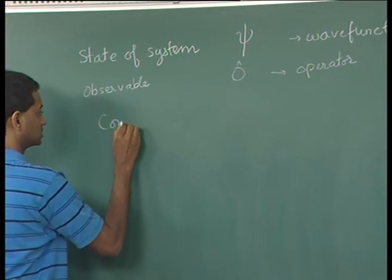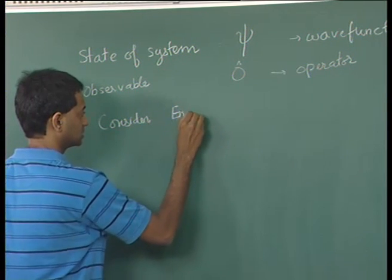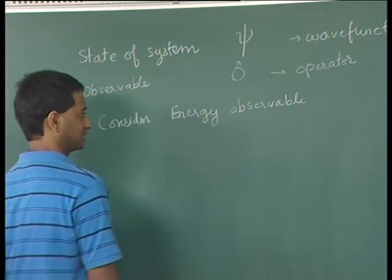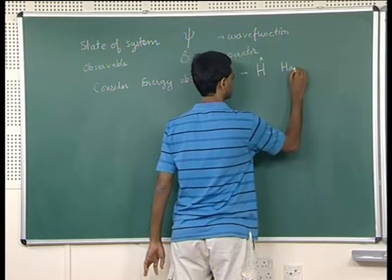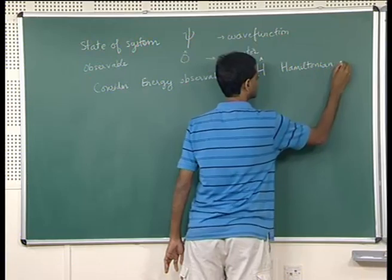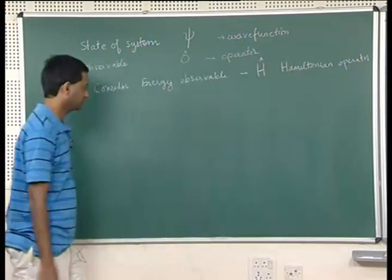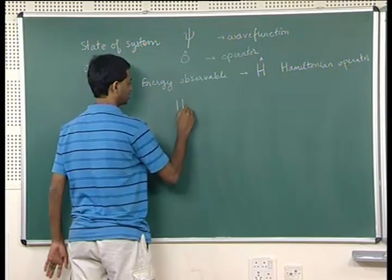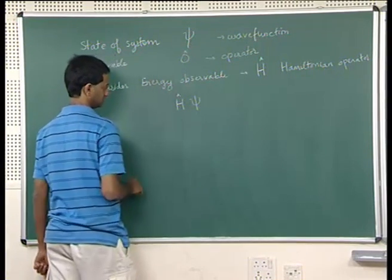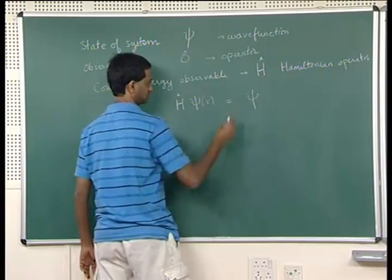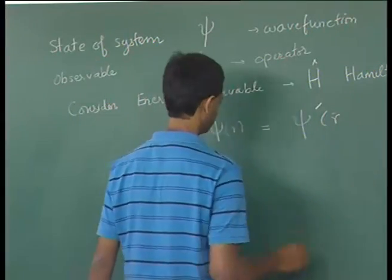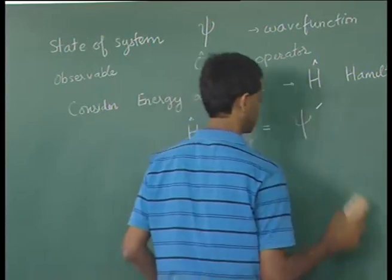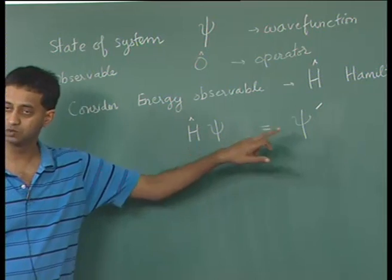Let us consider the energy observable. The operator is called the Hamiltonian operator. Corresponding to the energy observable, there is an operator called the Hamiltonian operator. An operator acts on a wave function to give you some other wave function — it acts on psi to give you psi prime.